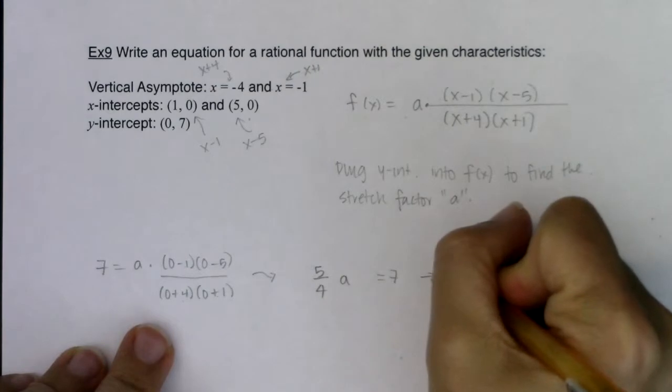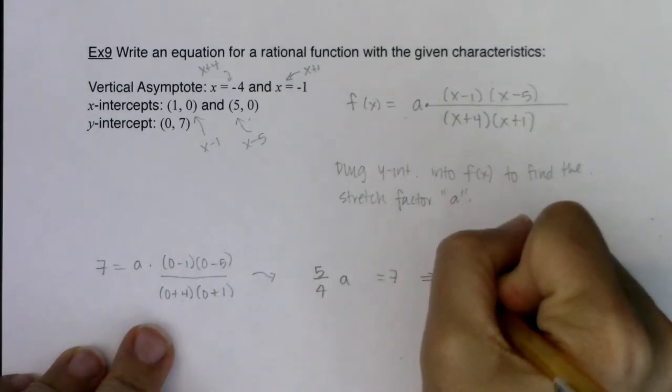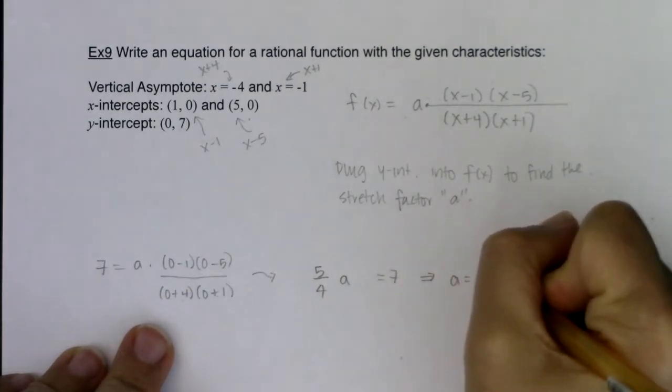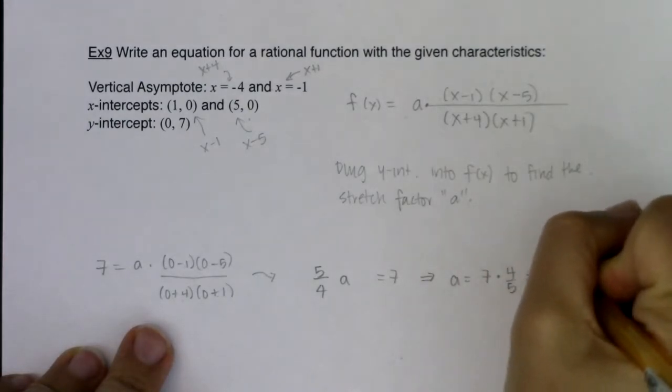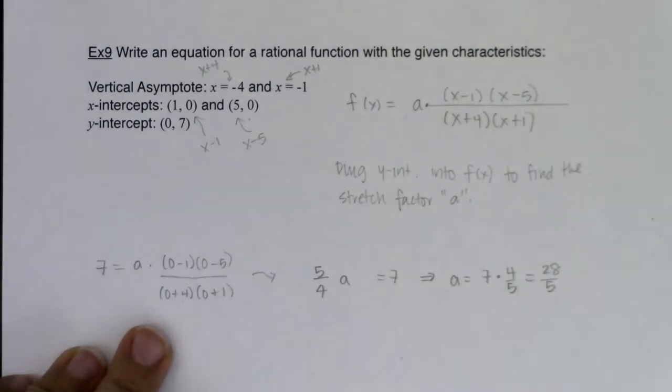I'm going to divide by 5 fourths, which is like saying a would equal 7. Dividing by 5 fourths is like multiplying by 4 fifths. So I'm looking at 28 fifths.